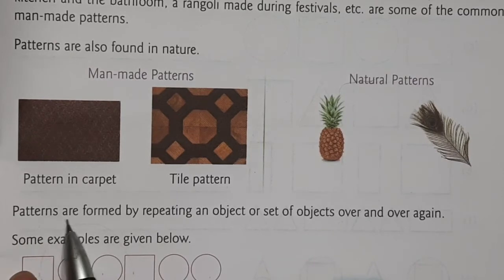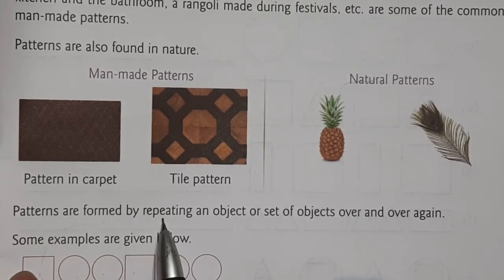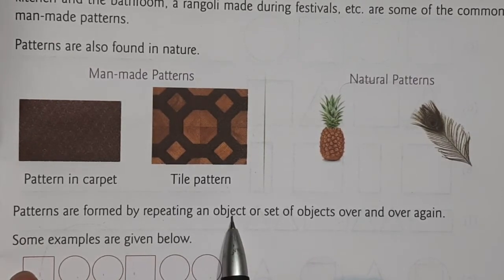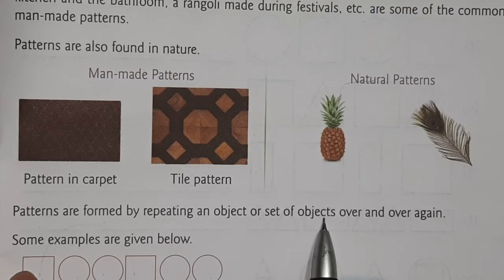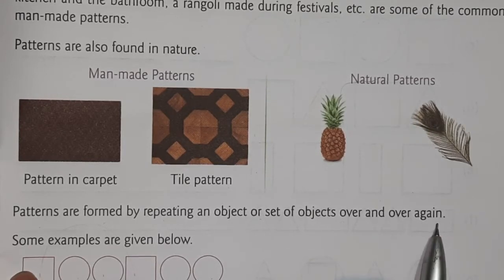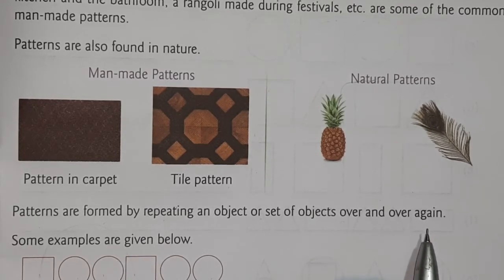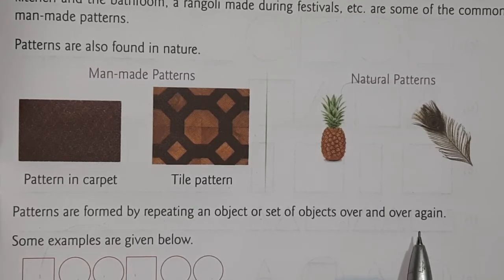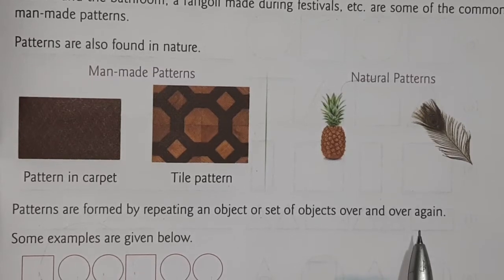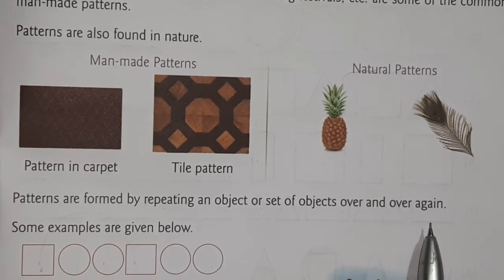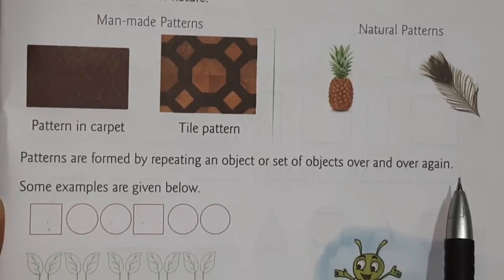Patterns are formed by repeating an object or set of objects over and over again. So patterns are formed by repeating — that is called repetition. Again and again the things are repeated, or in increasing order also. So we will see repeating patterns.